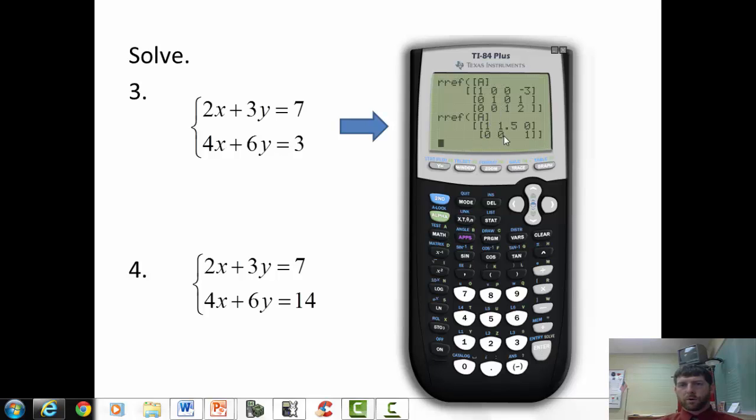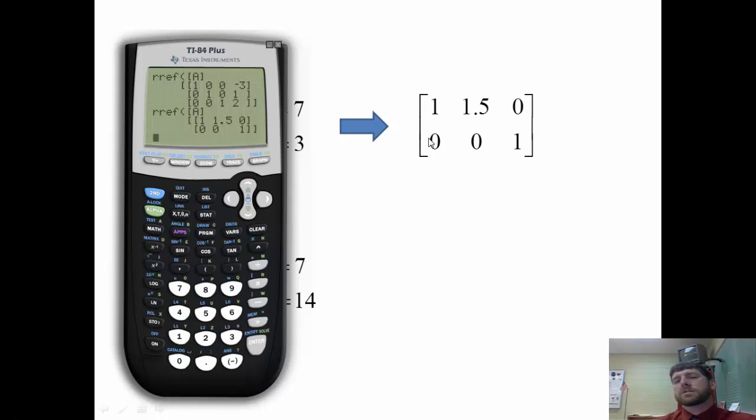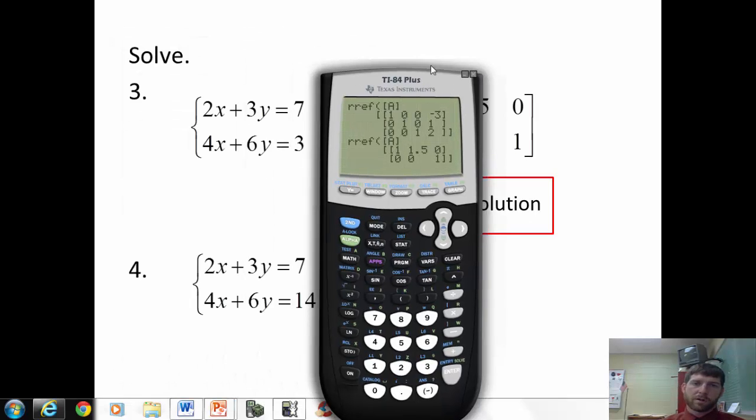RREF. Second matrix A. And on this one, see how we didn't get one, one for the diagonal and zeros for the other spots? We got this other gibberish on here. So I want you to look at that bottom line. And that bottom line is going to tell you what's going on. Remember it was x's, then y's, then what it equals. That's how we set it up. So this says 0x's plus 0y's equals 1. Well, is 0 ever equal to 1? Well, the answer is no. Since this bottom row is false, since 0 is never equal to 1, we say that the system has no solutions.